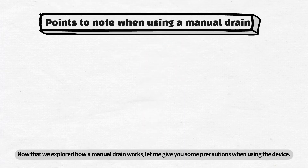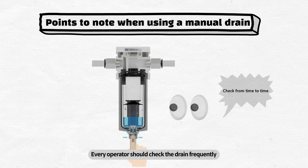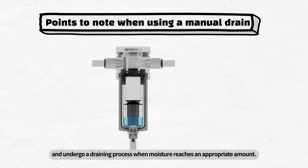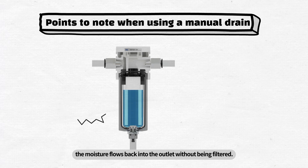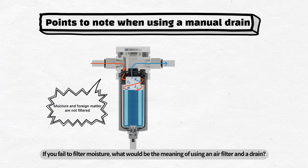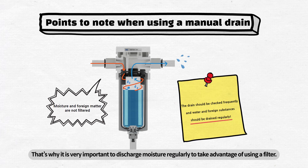Now that we explored how a manual drain works, let me give you some precautions when using the device. Every operator should check the drain frequently and undergo a draining process when moisture reaches an appropriate amount. If you miss this process and leave the drain to accumulate moisture inside, the moisture flows back into the outlet without being filtered. If you fail to filter moisture, what would be the meaning of using an air filter and a drain? That's why it is very important to discharge moisture regularly to take advantage of using a filter.